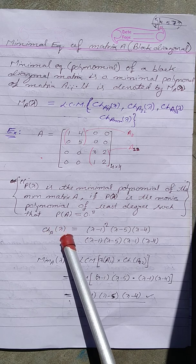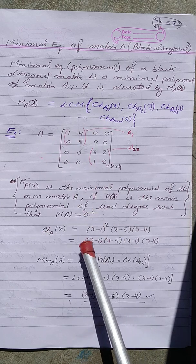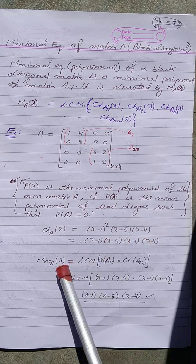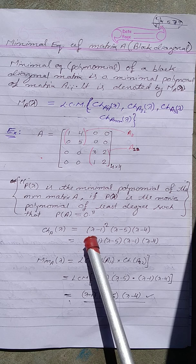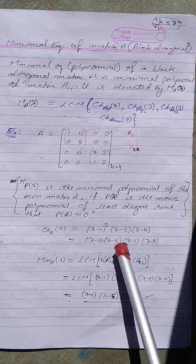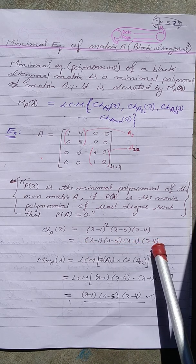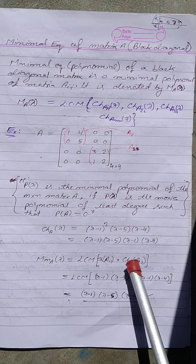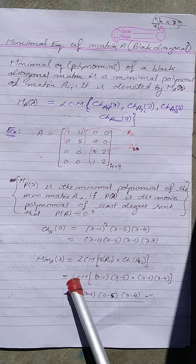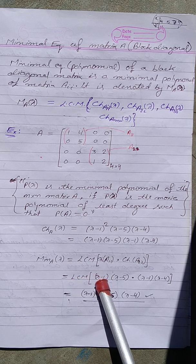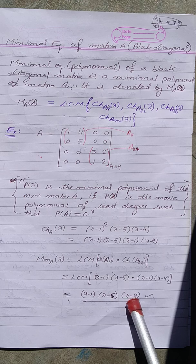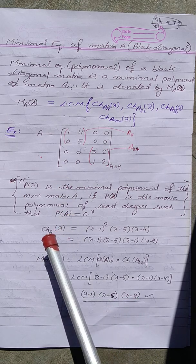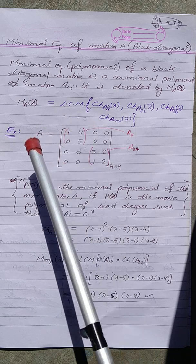The characteristic equation of this block diagonal matrix is (λ−1)(λ−5)(λ−1)(λ−4). The minimal polynomial is the LCM of the characteristic polynomial of the first matrix and the characteristic polynomial of the second matrix, which equals (λ−1)(λ−5)(λ−4).